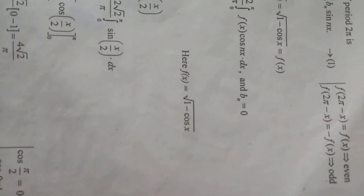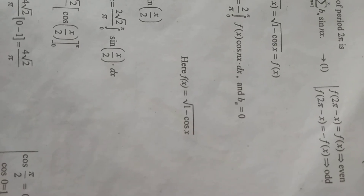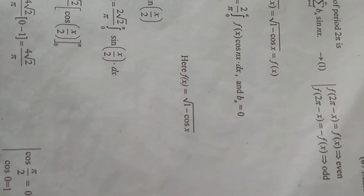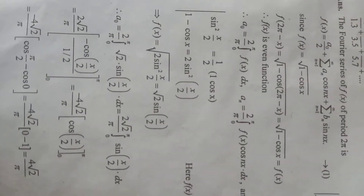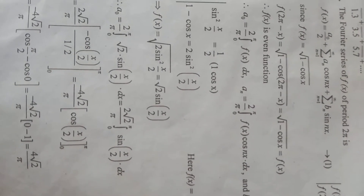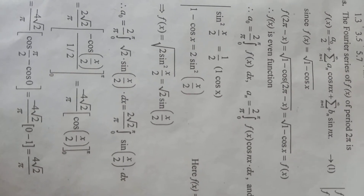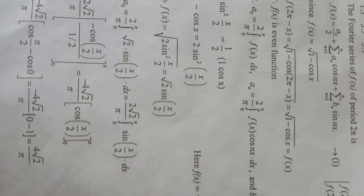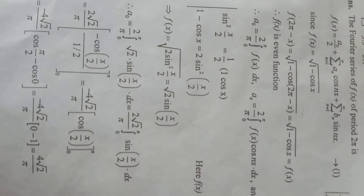This is our first equation. If f of 2 pi minus x equals f of x, then it is an even function. If f of 2 pi minus x equals minus f of x, then it is odd. Since f of x equals square root of 1 minus cos x, we consider the first equation. So f of 2 pi minus x equals square root of 1 minus cos of 2 pi minus x, which equals square root of 1 minus cos x, which is f of x.